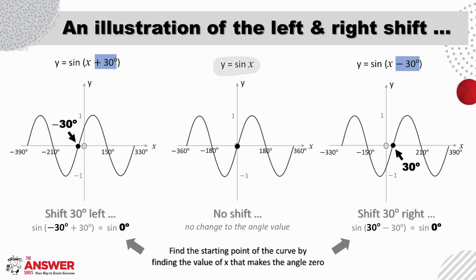Again starting with a standard graph of sine, let's focus here on its starting point. Sine of zero degrees is zero and therefore one of the waves of the sine graph starts at the origin. If we go across here now to look at y equals sine of x plus 30, we can see that the value for x that makes this bracket zero is minus 30 and so our graph shifts to the left with the start of the sine wave being at minus 30 degrees.